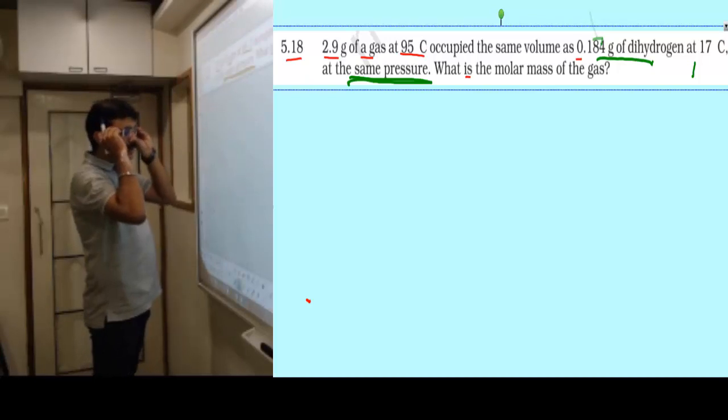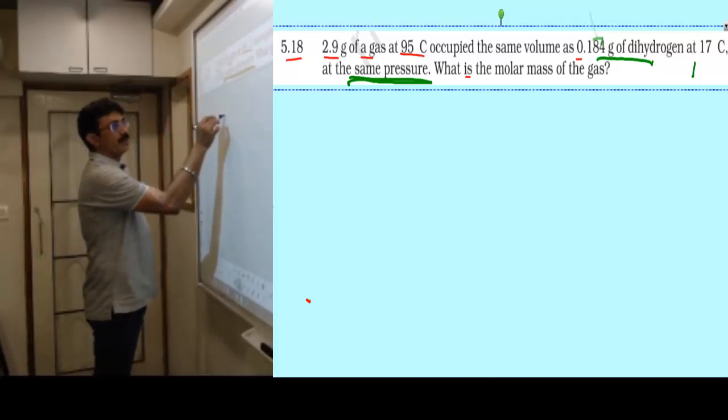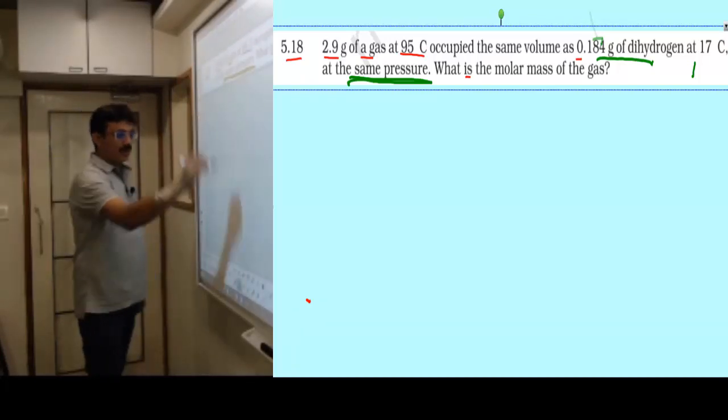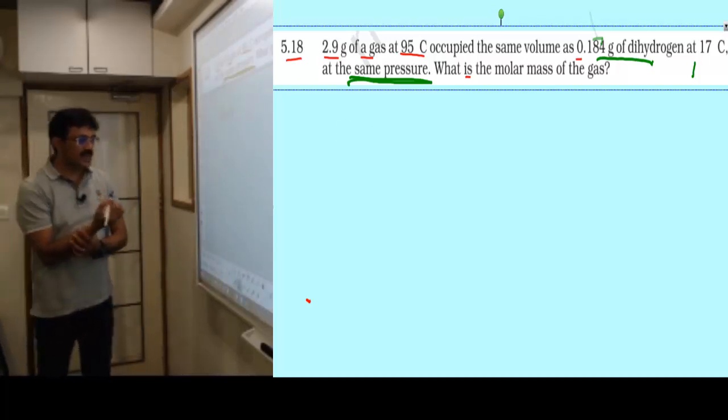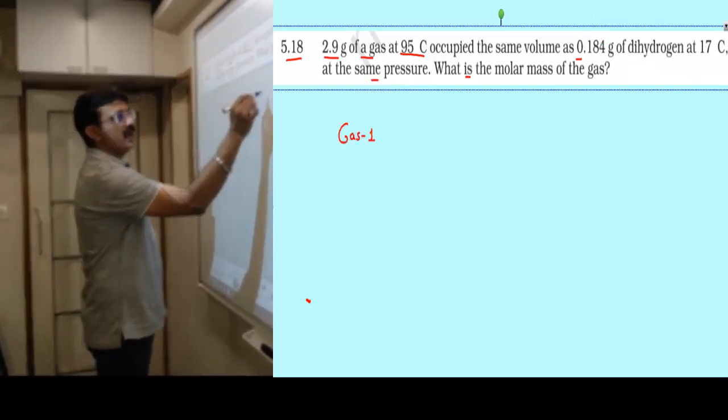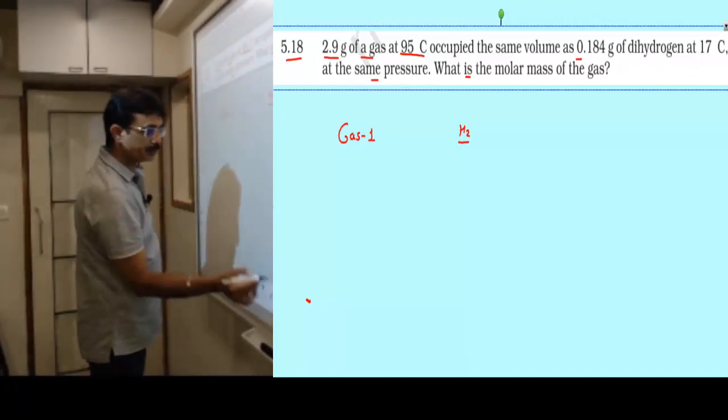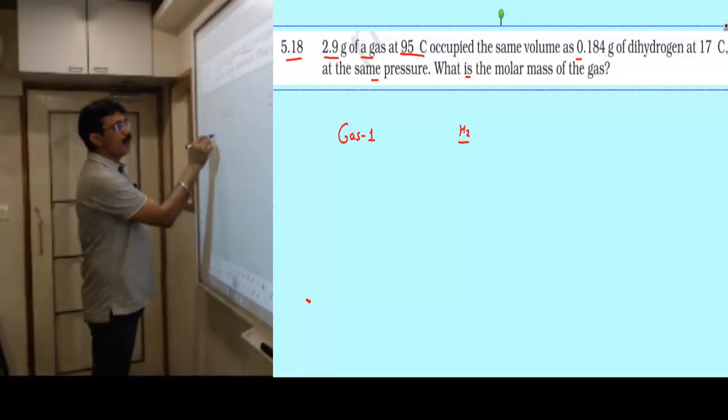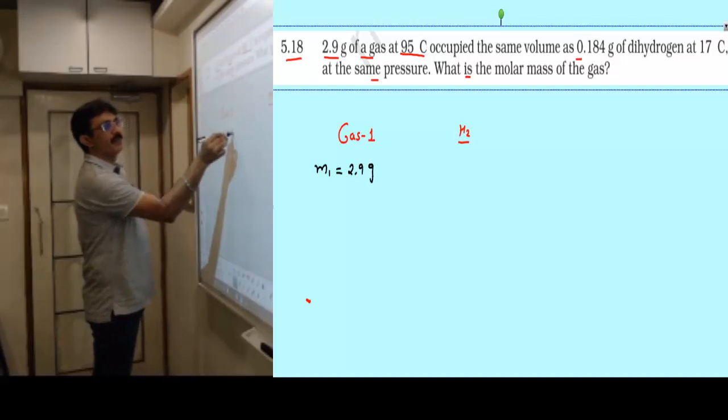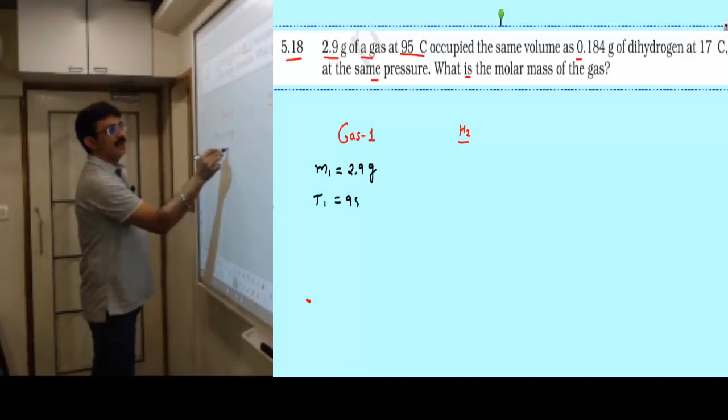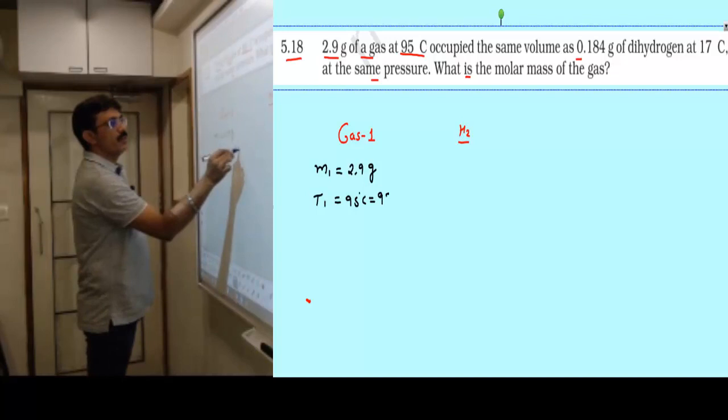Let's take gas one as unknown and gas two as hydrogen. For both, they have given mass. Gas one has 2.9 gram at 95 degree Celsius, which equals 368 Kelvin. Hydrogen gas has 0.184 gram at 17 degree Celsius, which equals 290 Kelvin.